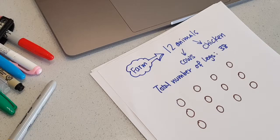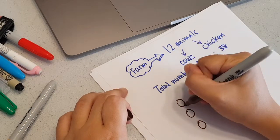What I'm doing now is I'm going to draw it. If I make the assumption, if I'm to suppose that they are all chickens, they will each have two legs, so I'm going to draw two legs to each one.